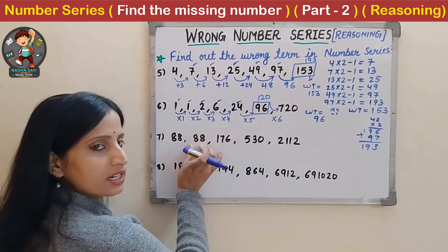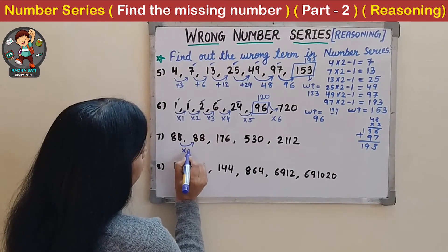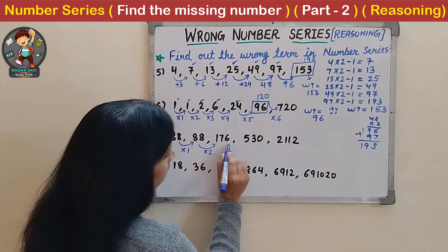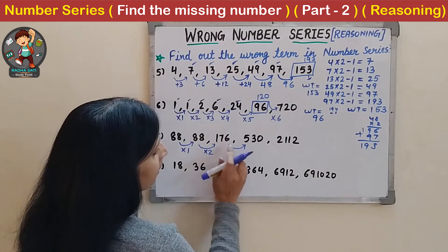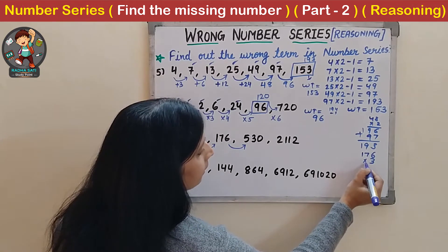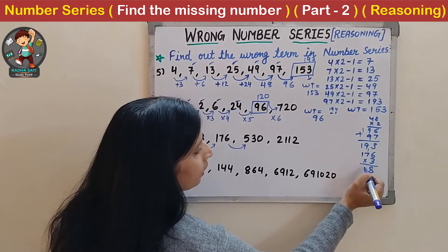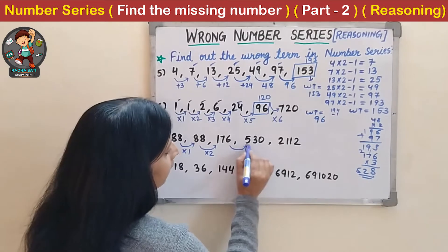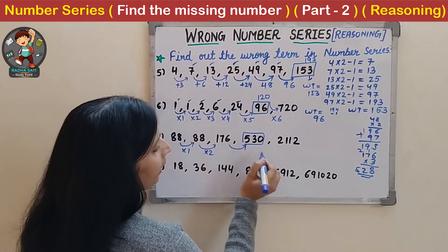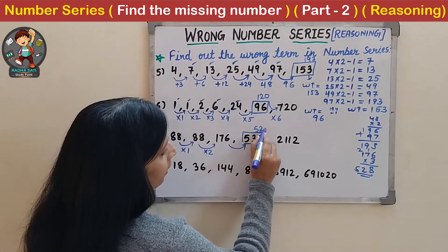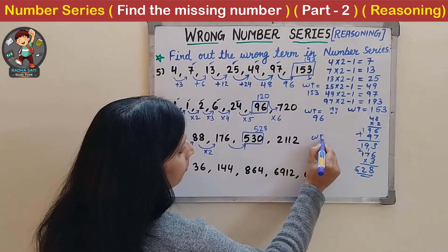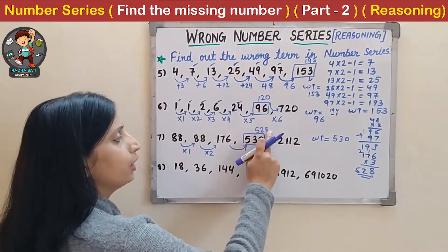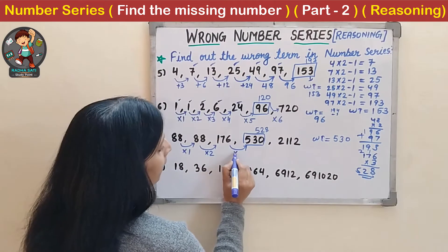Check: multiplication by 1, then multiplication by 2. Now 176 multiplied by 3 gives 528. But here it is given 530. So this should be 528. The wrong term is 530 and instead of this it should be 528 - because the pattern is multiplication by 1, then 2, then 3.